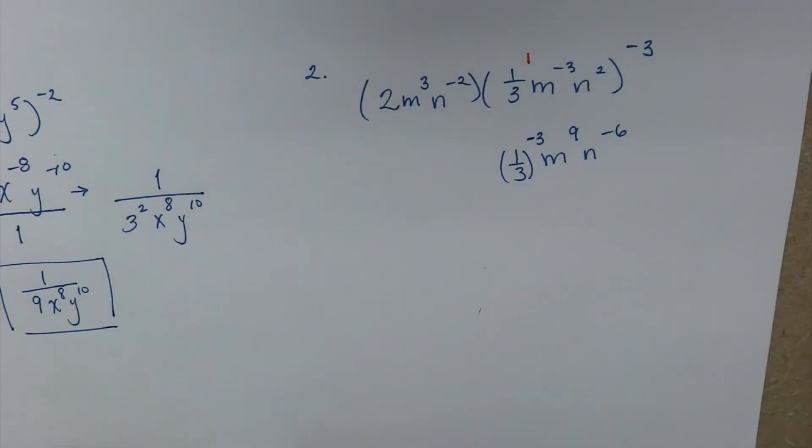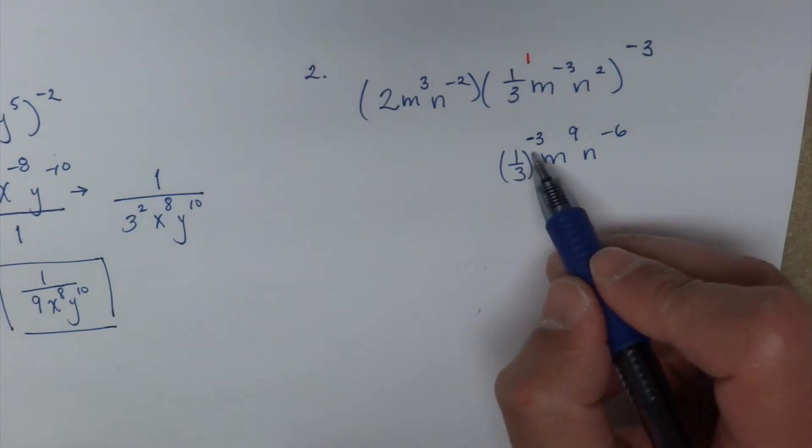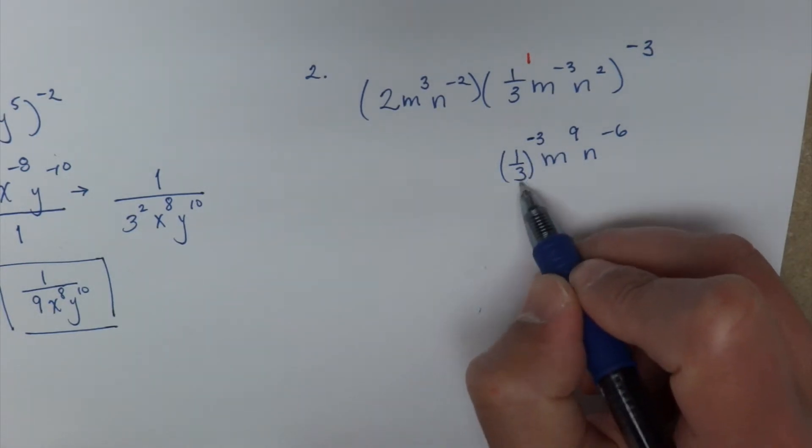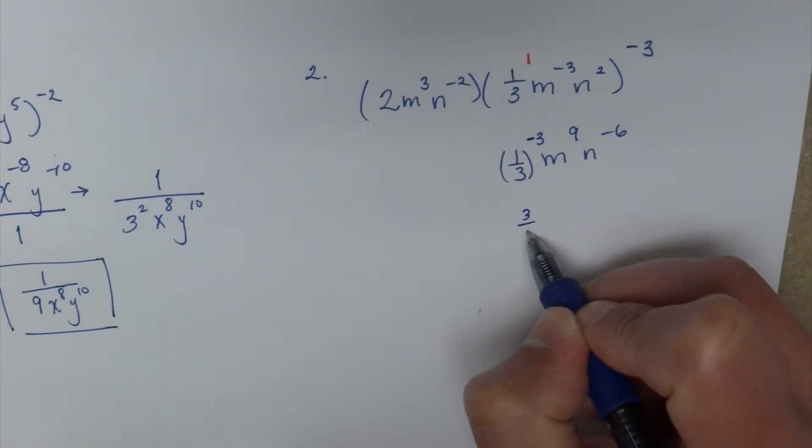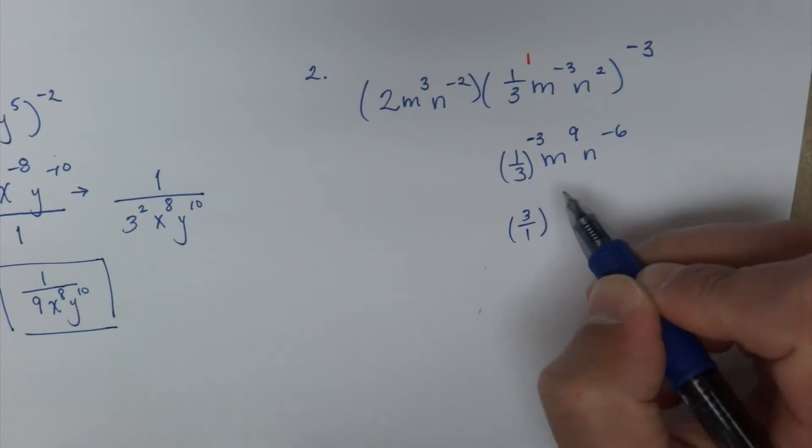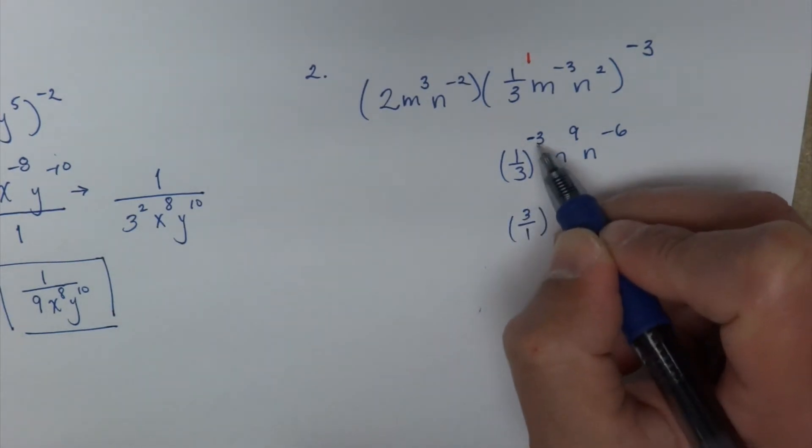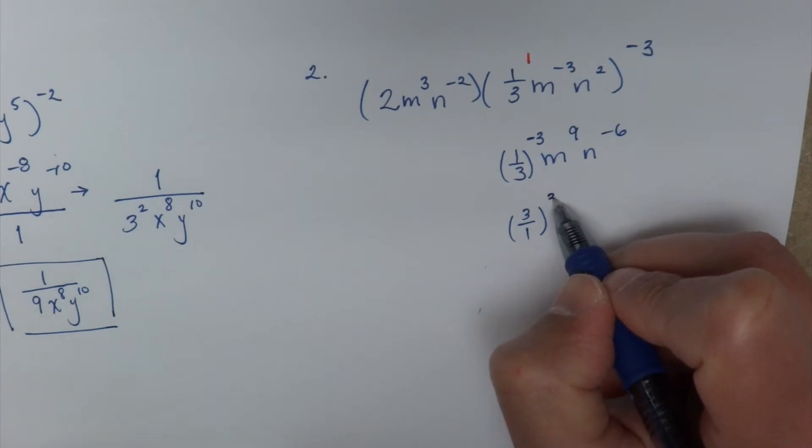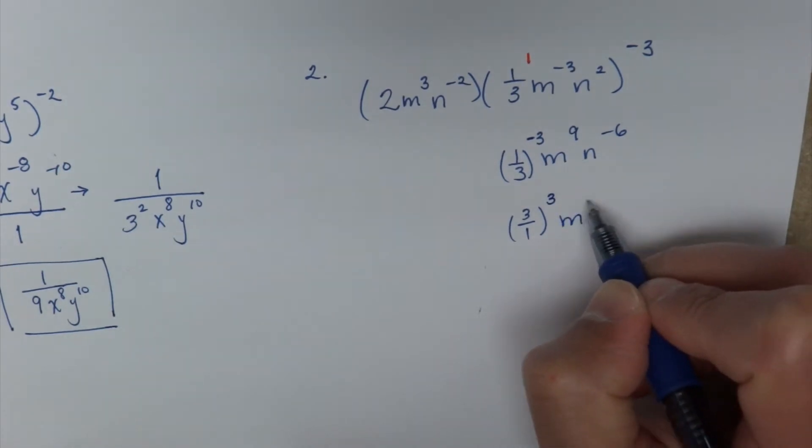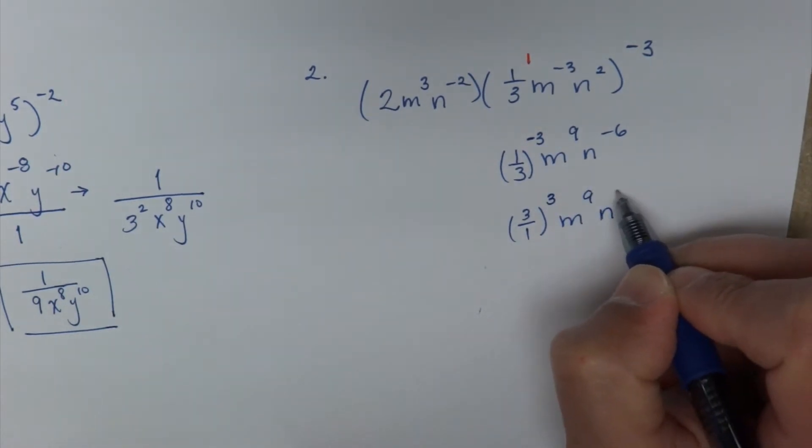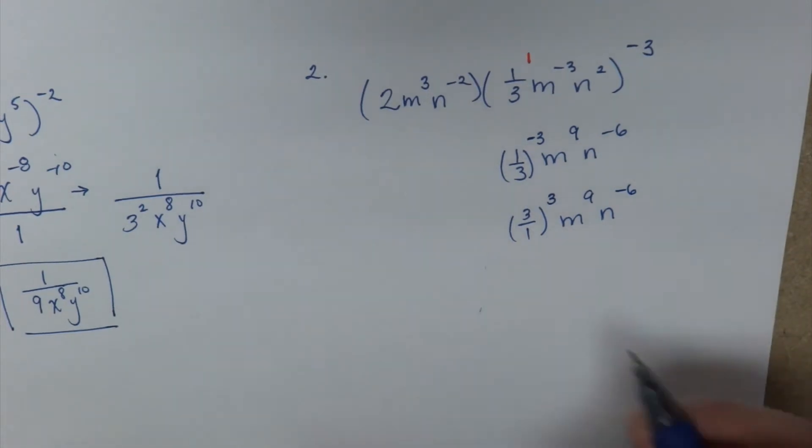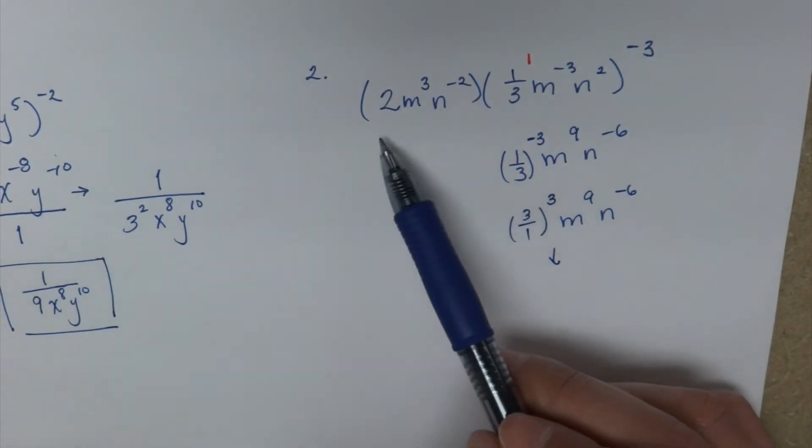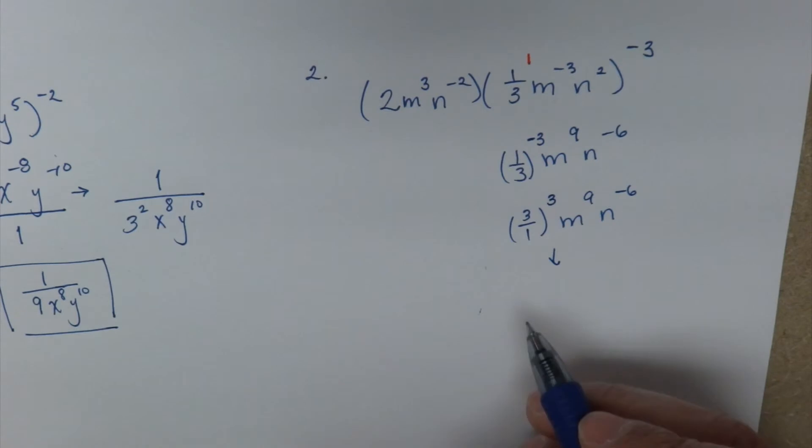Now from here I'm going to simplify this a little bit further. Remember, negative exponents we do the reciprocal, so 1/3 becomes 3 over 1. Now remember, whenever you do the reciprocal, this negative exponent becomes now a positive m to the 9th and the negative 6, I'm just going to leave it like that for right now because I have to multiply with this other expression in the front.